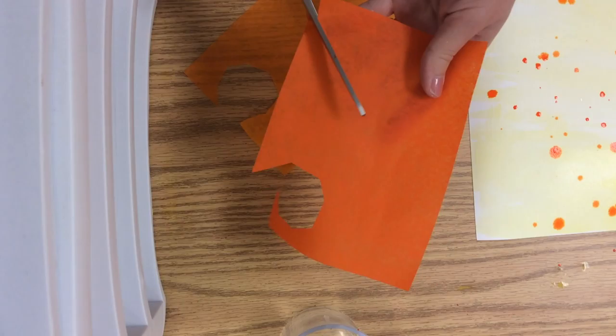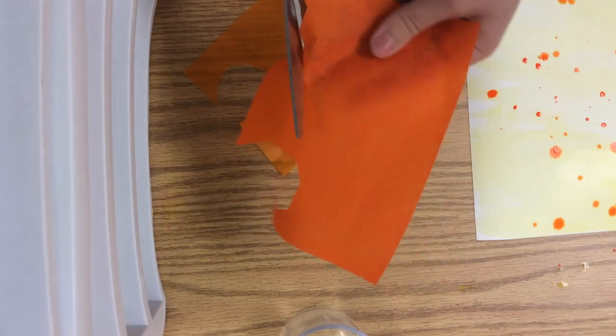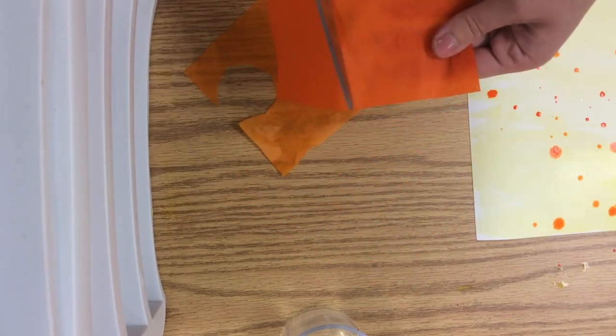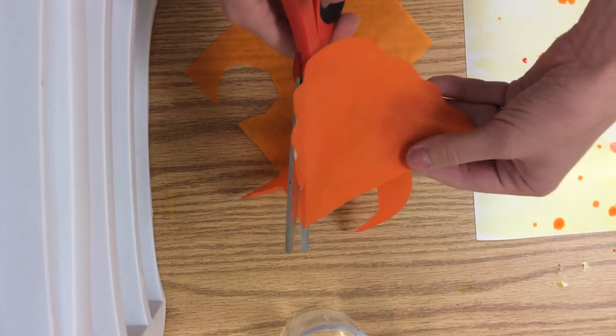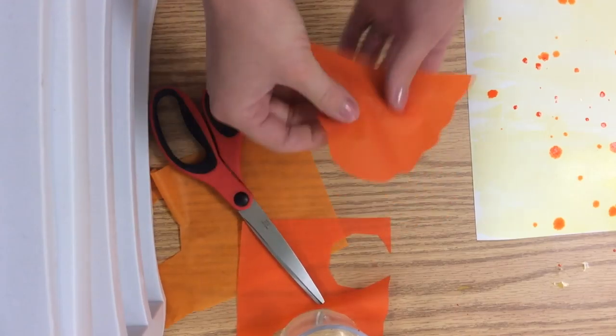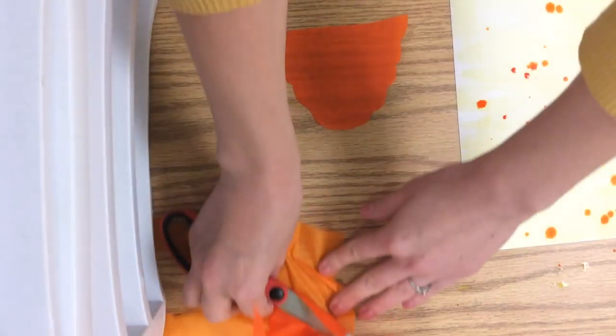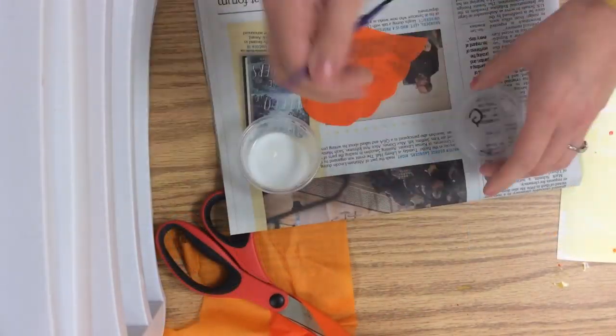You don't have to do this, it's just an option. The next thing I'm doing for my background is cutting out a shape out of tissue paper to glue onto my background. You could cut out circles, flowers, leaves,